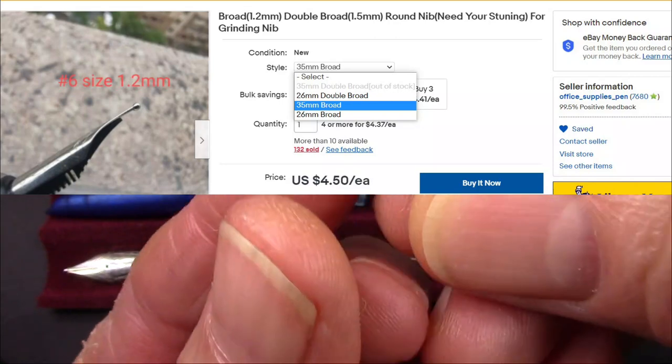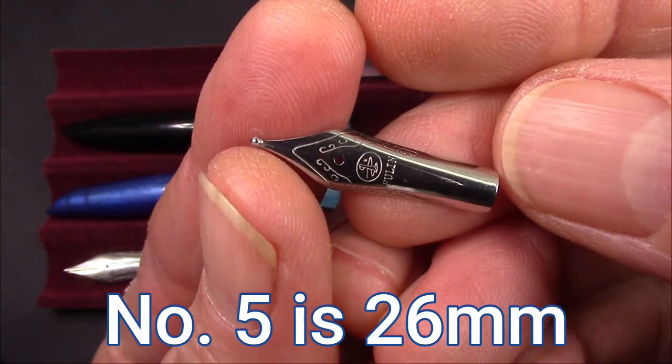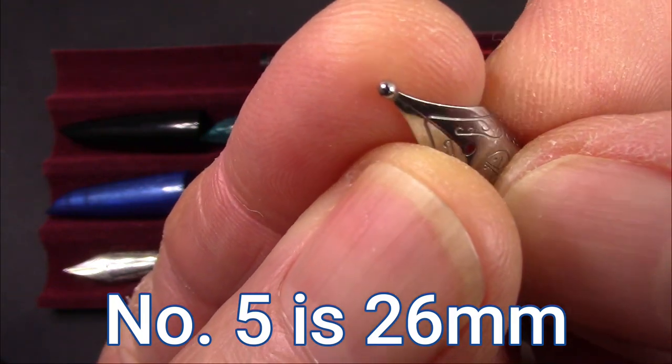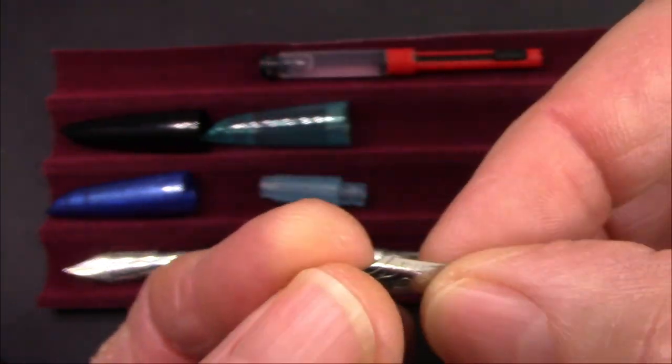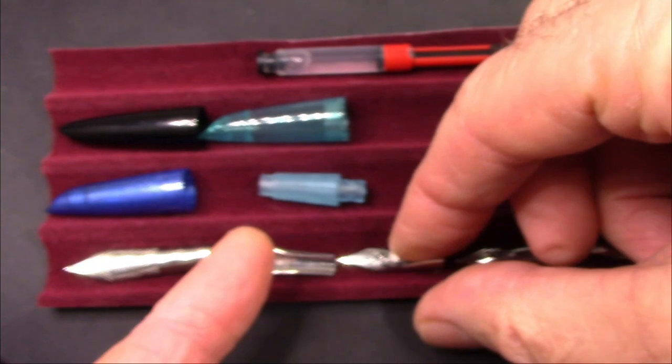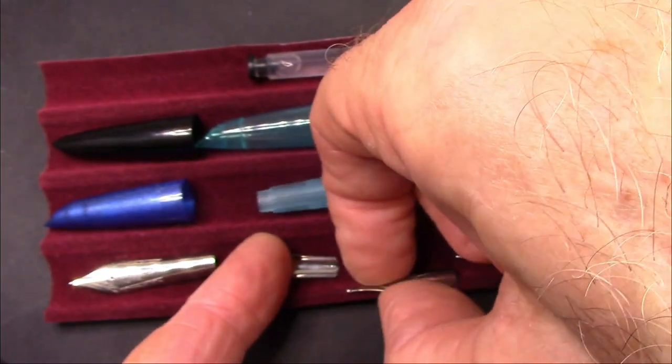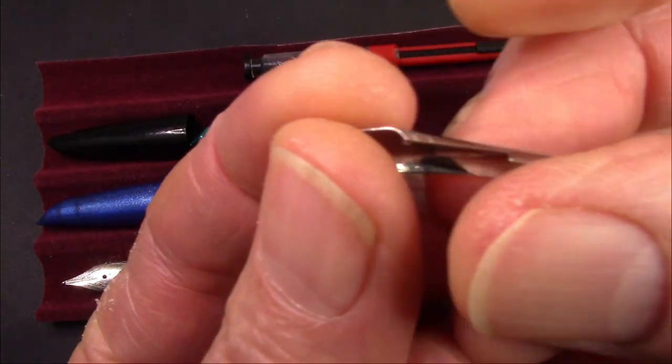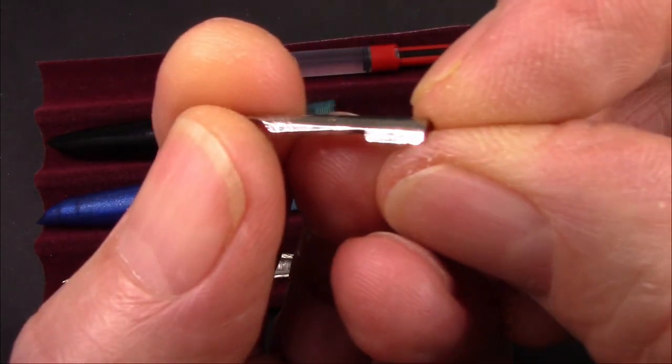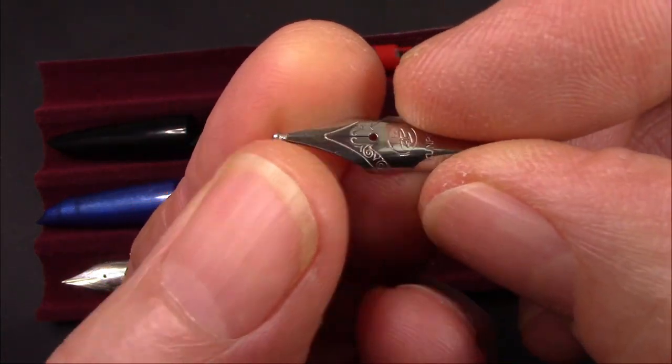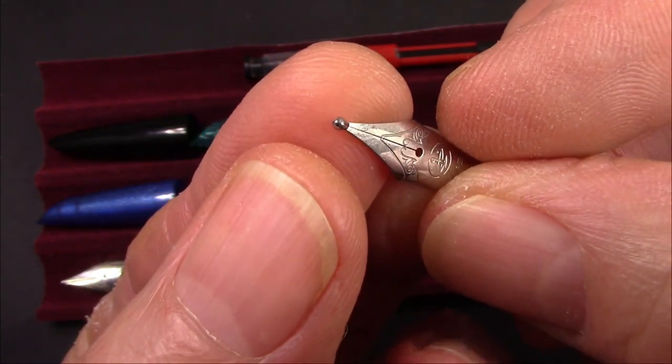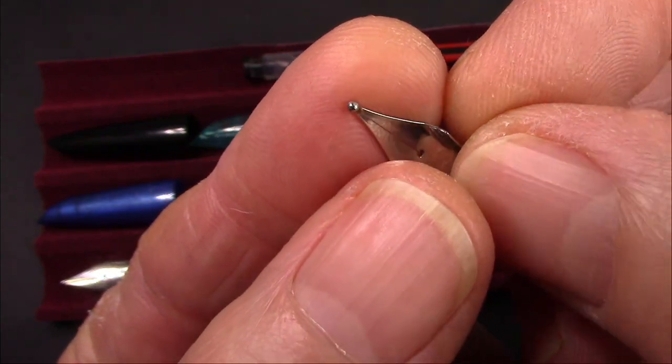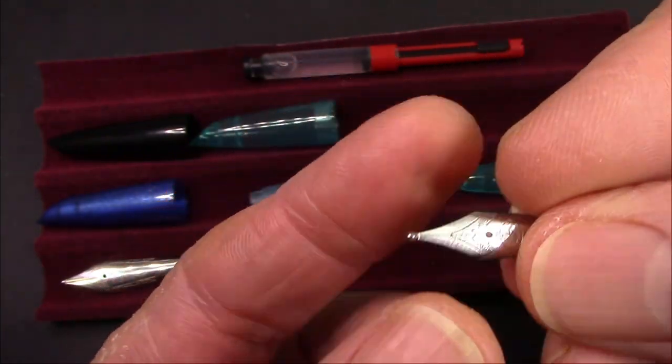That was the number six size or 35 millimeter. And then it also comes in a 28 millimeter or number five size. This is the double broad 1.5. And it also comes in a pilot style with the little wings on the back.